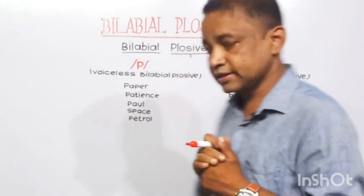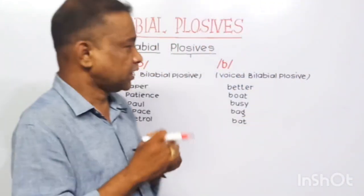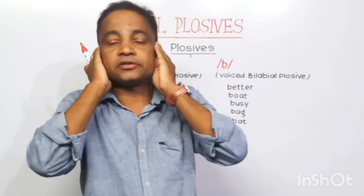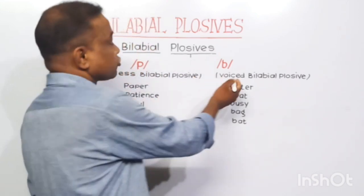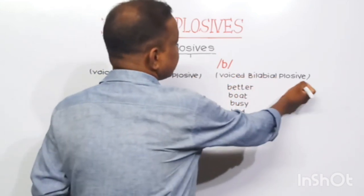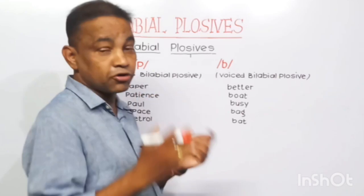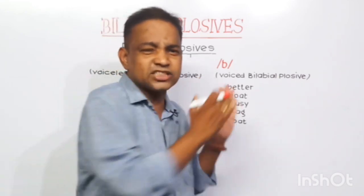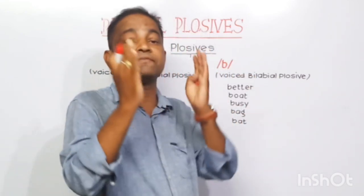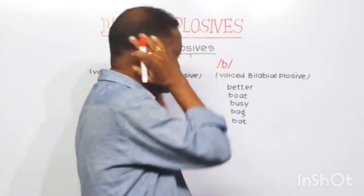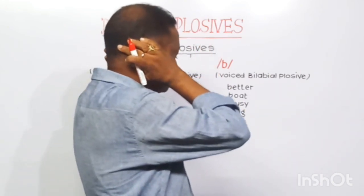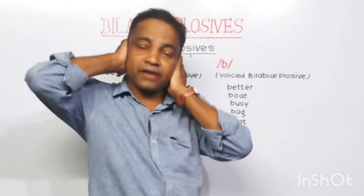Let us think about /b/. When you produce the sound /b/, do you feel vibration? Yes — /b/, /b/, /b/ — we feel vibration because vocal cords vibrate. So /b/ is called a voiced bilabial plosive. Practice words: badder, bad, busy. Yes, we feel vibration.